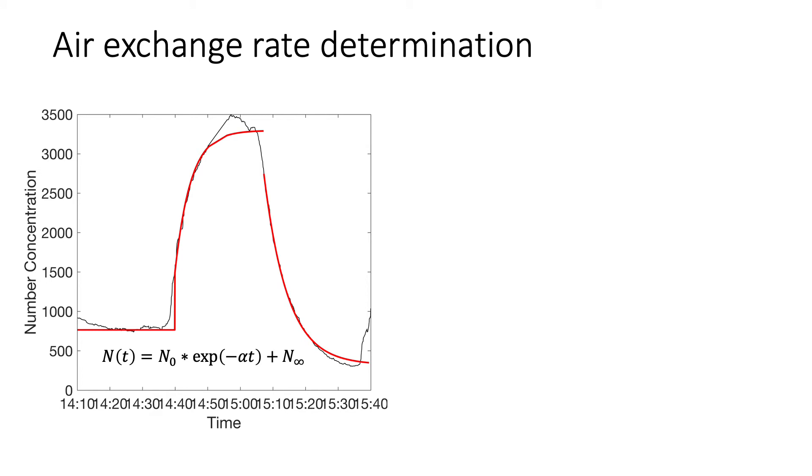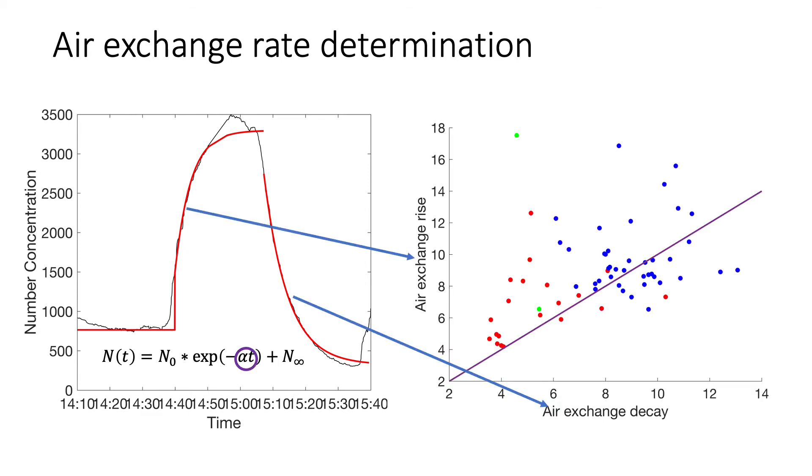The results that we analyzed were to see what would happen when we inject particles, look for the rise, and then what did the decay look like. We injected particles, let the concentrations go up, and then we turned it off and watched it go down. We know what the general trend of the equation should be from those box models. We fit that, and we extract the property of interest here, which is our air exchange rate, alpha.